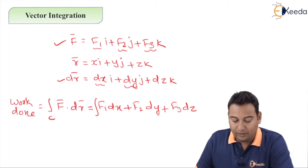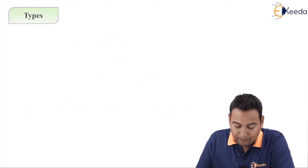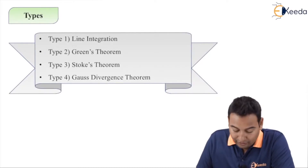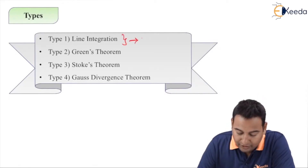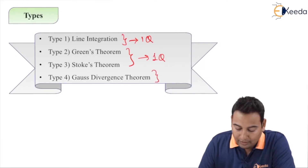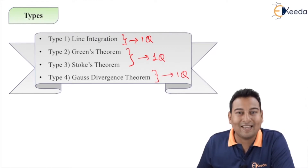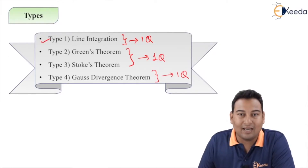Here it is a closed curve C — this is the formula for work done when F̄ and dr̄ are given. In vector integration we have four types of problems: line integration, Green's theorem, Stokes' theorem, and Gauss divergence theorem. In the exam, expect one question from line integration, one from Green's or Stokes', and one from Gauss divergence — at least three problems from this chapter.